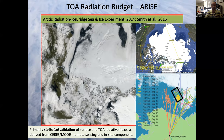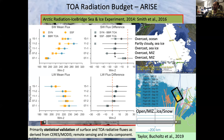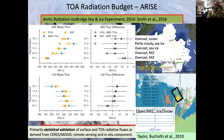From ARISE, we found good agreement between aircraft and satellite in the long wave, but in the short wave there's a negative bias of about 10 watts per meter squared, where CERES reflects a little less shortwave radiation than what we saw from the aircraft. We have ideas about what could be causing this error but don't know exactly — which motivates getting more observations.